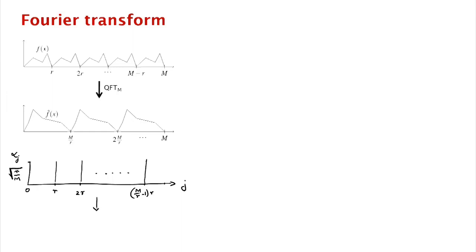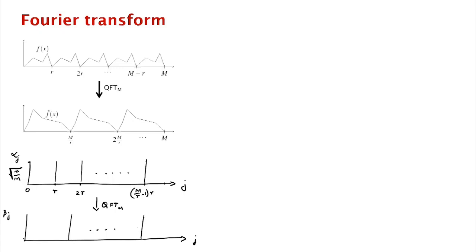Now, what does the quantum Fourier transform mod m do to this superposition? It maps it to a new superposition on the beta_j's, which is also periodic but now with period m/r. The non-zero amplitudes are at multiples of m/r — exactly r of them, from 0, m/r, 2·(m/r), ..., up to (r−1)·(m/r). Since there are exactly r of them, each amplitude is 1/√r.